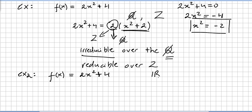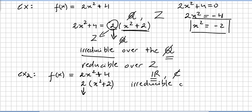It's also irreducible over the real numbers — I said the rationals but I meant the real numbers — because we do the same factorization, and 2 is a unit in the real numbers. So it's irreducible over the real numbers.